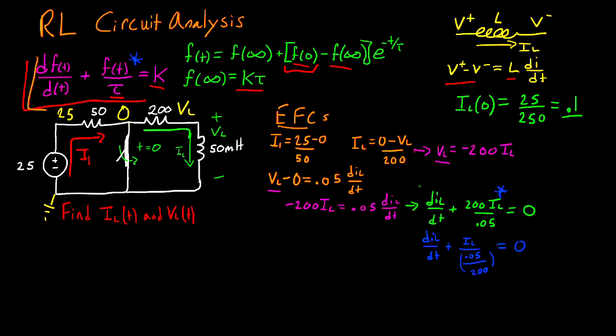And at this point, we have everything we need to solve for IL. And I can write that IL of T is equal to F of infinity. And in this case, infinity is equal to K times tau, where this is my tau and this is K. So the product of this is going to be 0. So F of infinity is going to be 0. So I can leave that term out.